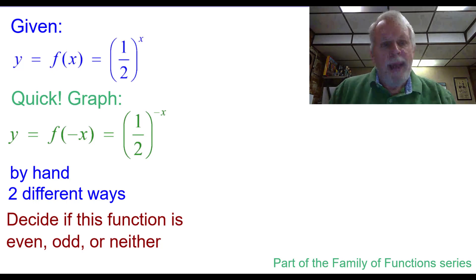Quick, graph y equals the quantity of 1 half raised to the opposite of x by hand, two different ways, and decide if the 1 half to the x function is even, odd, or neither. This is part of the family of functions series.